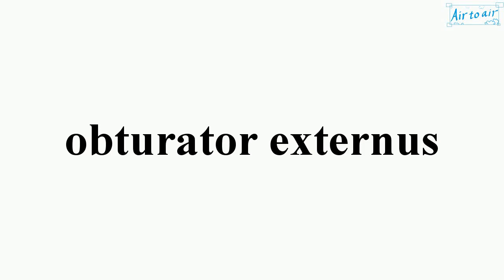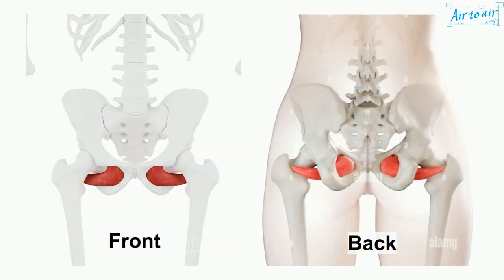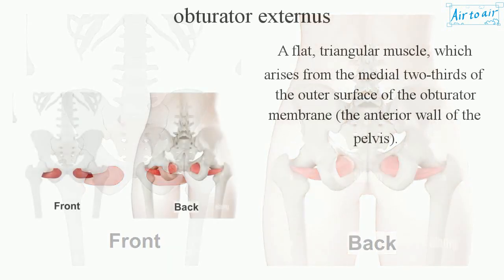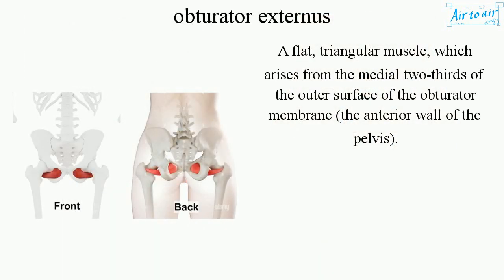Obturator externus is a flat, triangular muscle which arises from the medial two-thirds of the outer surface of the obturator membrane and the anterior wall of the pelvis.